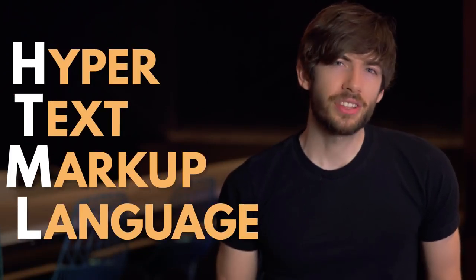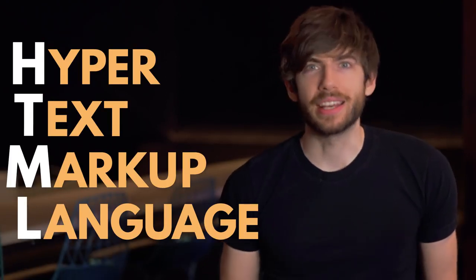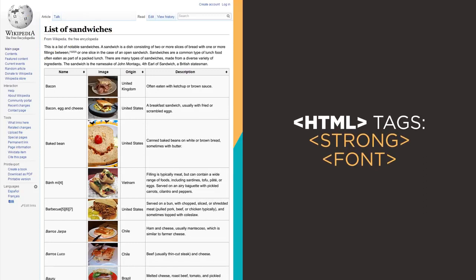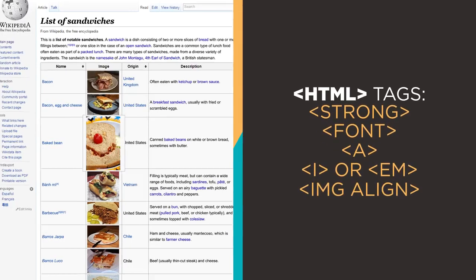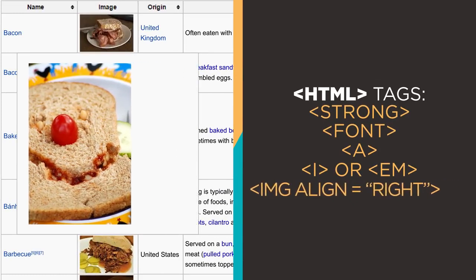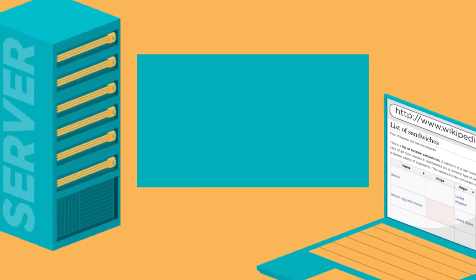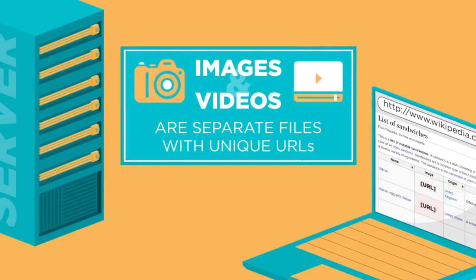HTML stands for Hypertext Markup Language. You can think of that as the language you use to tell a web browser how to make a page look. If you think about something like Wikipedia, which is really just a big simple document, HTML is the language that you use to make a title big and bold, to set the right font, to link certain text to other pages, to make some text bold or italic, to put an image in the middle of the page, or align it left or right. The text of a web page is included directly in the HTML, but other parts — images or videos — are separate files with their own URLs that need to be requested.